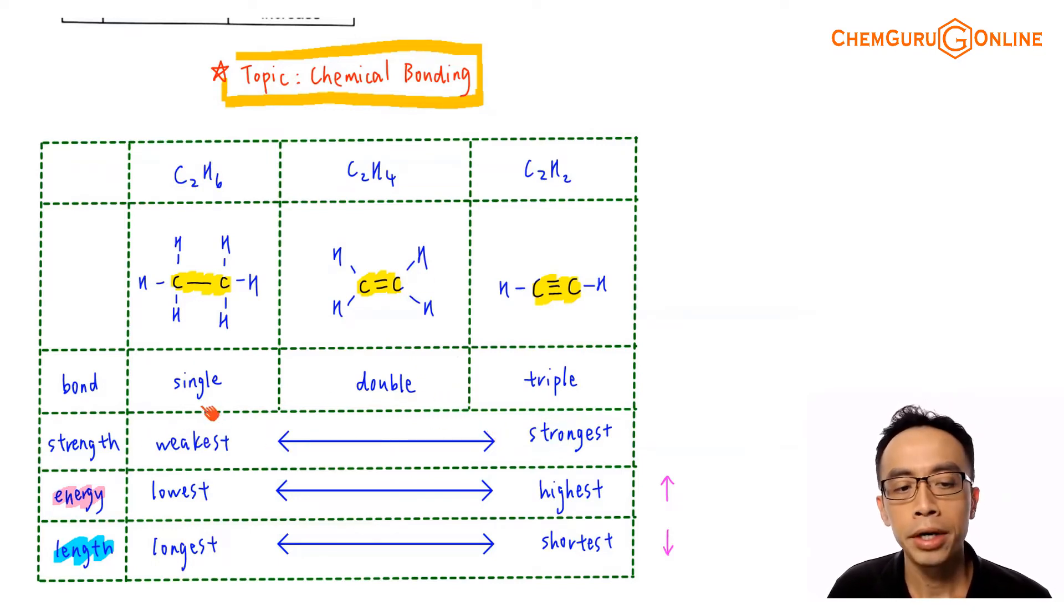And if your bond strength involving the carbon-carbon single bond is the weakest, then we will expect the bond energy to be the lowest, the least amount of energy required to break the carbon-carbon single bond. And if I compare the carbon-carbon triple bond, since this bond is the strongest, it should require the most amount of energy to break that bond. And therefore the bond energy involving the carbon-carbon triple bond should be the highest.